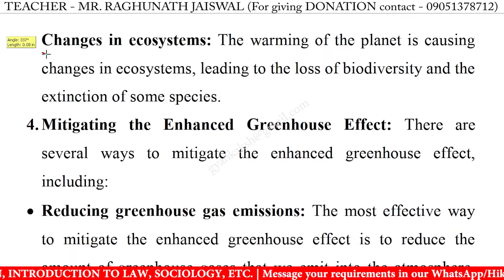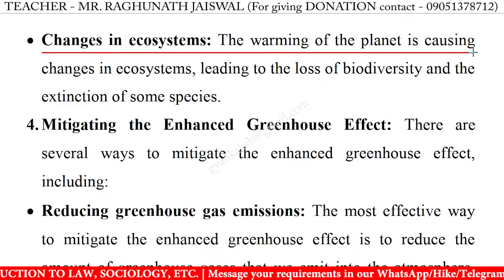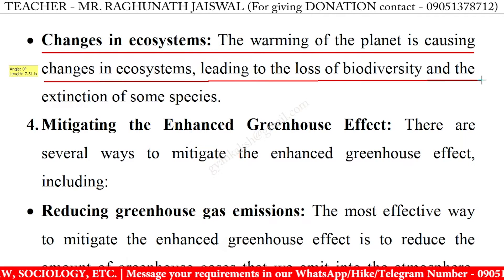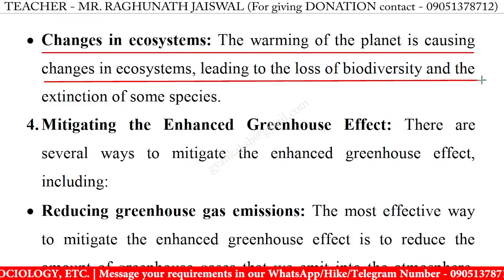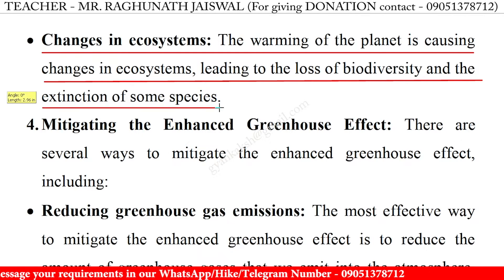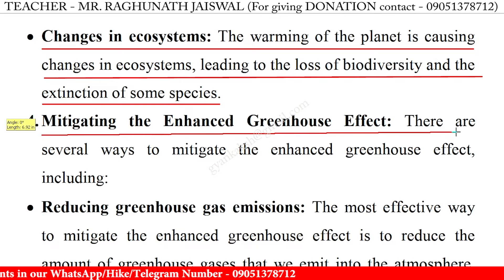Changes in ecosystems: the warming of the planet is causing changes in ecosystems, leading to the loss of biodiversity and the extinction of some species. Mitigating the enhanced greenhouse effect: there are several ways to mitigate the enhanced greenhouse effect.